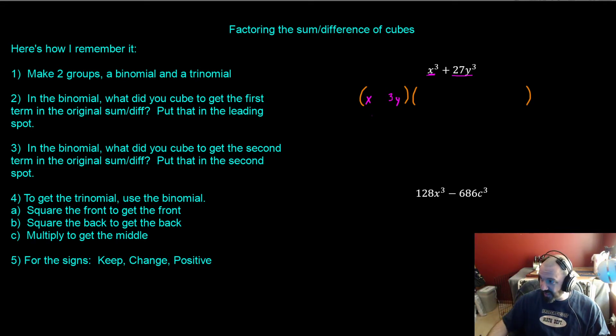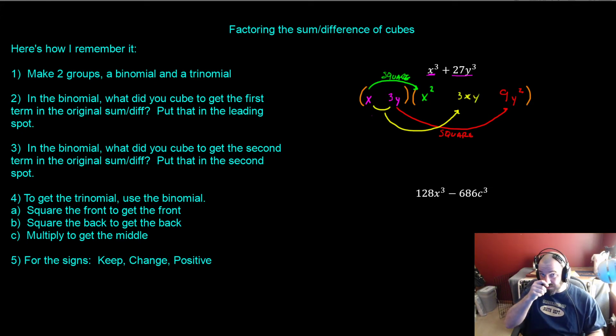Alright, let's see if I can manipulate the colors here. So step number two and three. So what did you cube to get the front? That goes in the binomial in the front. What did you cube to get the back? That goes in the back of the binomial. Now you use the binomial to build the trinomial. So square the front to get the front. Square the back to get the back. So 9Y squared. Multiply these two to get the middle. So that's going to give us 3XY. So now we built the terms as far as the values. We built the terms in the trinomial using the binomial.